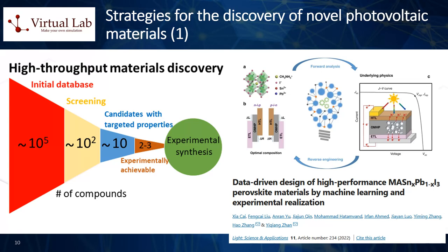One: virtual screening. First principles simulations can be used to screen large databases of materials to identify promising candidates for photovoltaics. By calculating the properties of thousands or even millions of materials, researchers can rapidly identify those that meet specific criteria related to band gap, absorption spectrum, and other relevant properties.